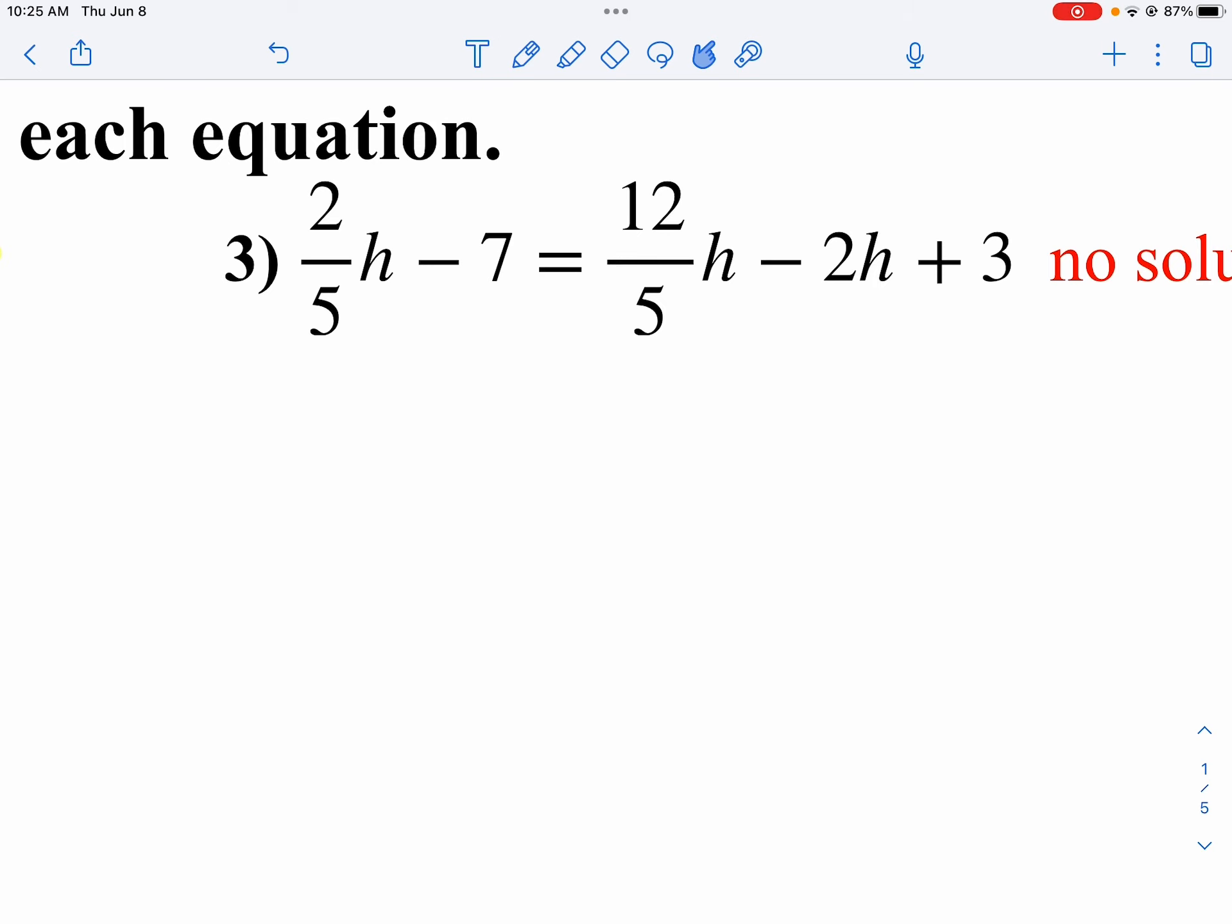Now, unlike the last one, I want to simplify this first, because we've got some fractions, and that makes it really ugly. So I look at my denominators. My denominators are 5. So what I'm going to do is multiply everything by 5.